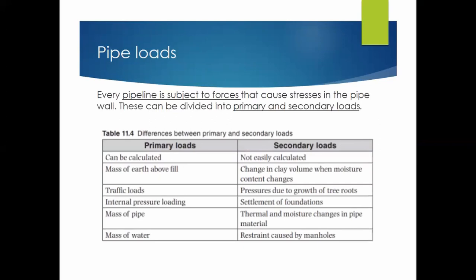Pipes are subjected to primary and secondary loads. Primary loads — which are easier to calculate — include the mass of earth above, traffic loads, internal pressure and loading, mass of the pipe, and mass of the water. Secondary loads are more difficult to calculate and include change in clay volume, pressure due to growth of roots, settlement of foundation, thermal and moisture changes, and restraint caused by the manhole.